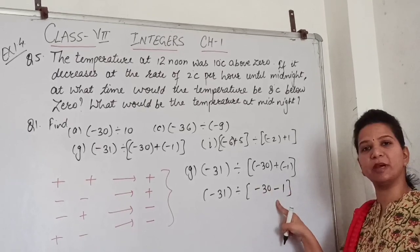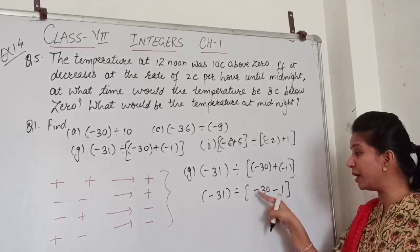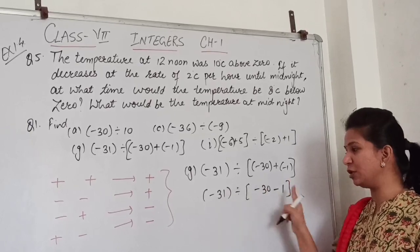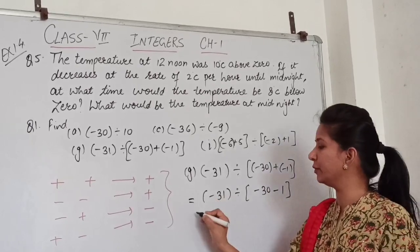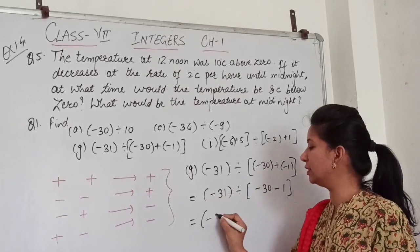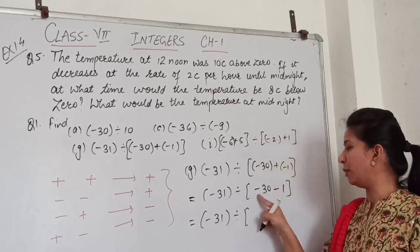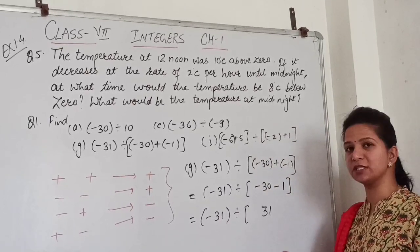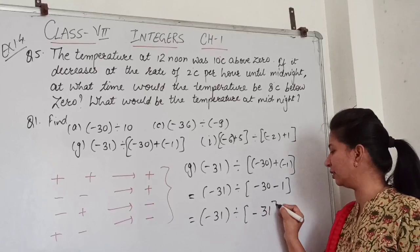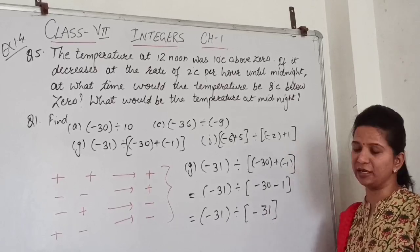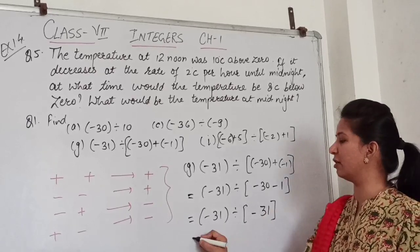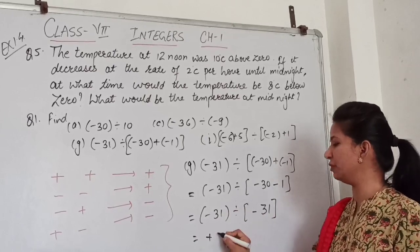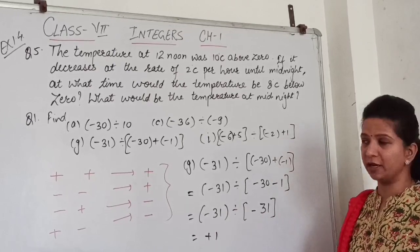Again we have minus minus here, which gives plus. We have integers plus minus. When we do this division, minus minus here gives plus. Now we have minus numbers and a minus sign, so minus here. For division: minus minus is plus, and 31 divided by 31 equals 1.